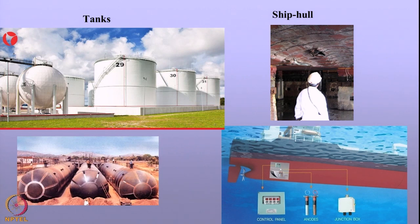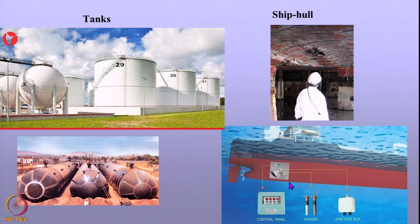Cathodic protection is also important in another area wherein you have tanks kept over the earth — slightly buried and in contact with the soil. You also have mounded bullets used for storing inflammable gases or liquids safely. You also have corrosion of ship hulls and offshore structures. So cathodic protection is very important over a range of structures, and we need to understand how effectively cathodic protection engineering can be implemented for all these structures.